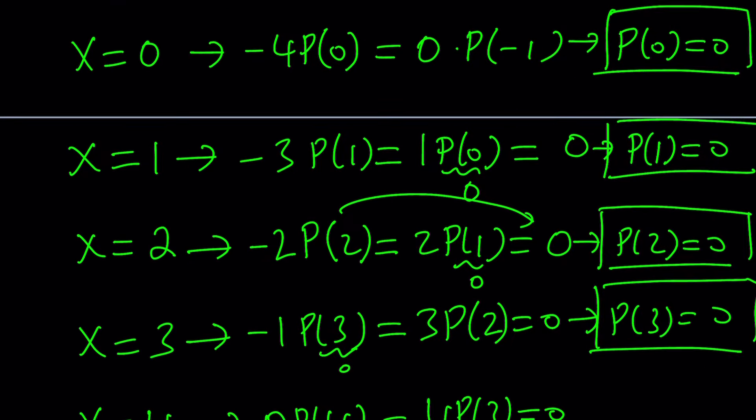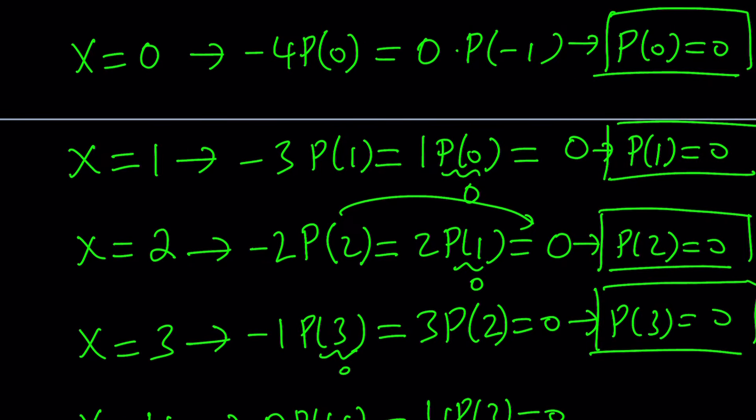We have to stop. Obviously, we had to stop somewhere. But we got something real good, so let's go ahead and see if we can use these. So, what does this mean? P of 0 is 0, P of 1, P of 2, and P of 3 are all 0.